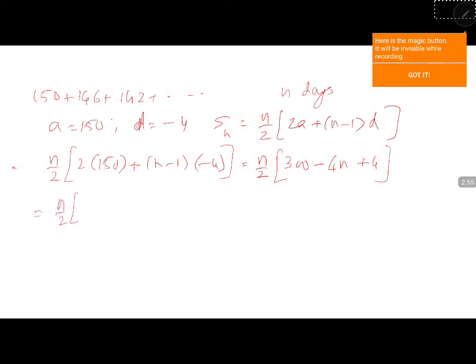2 common, n into 152 minus 2n. This is the total number of workers required.